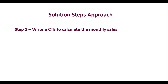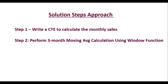In step two, we will calculate the three-month moving average using a window function. The average is computed by taking the current month's sales along with the sales of the two previous months, using the AVG function with a window function. In the last step, we will sort the results using ORDER BY month, which gives results in chronological order to ease analysis.